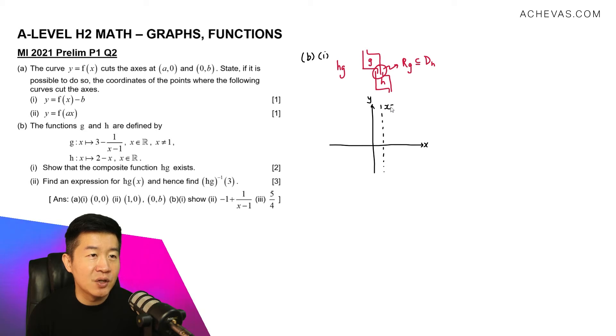The vertical asymptote is x equals 1. And here we have the horizontal asymptote. The horizontal asymptote is equal to 3. So y equals 3 over here. And based on what I have on the calculator, we will have a graph that looks something like this, and this.